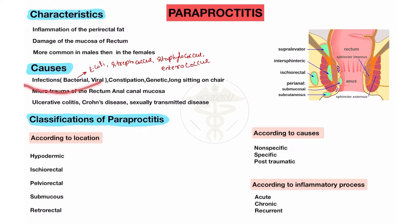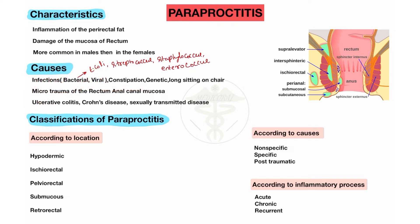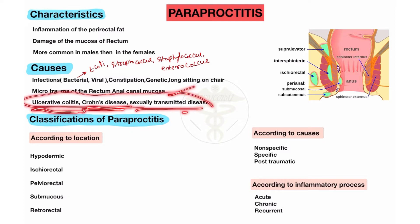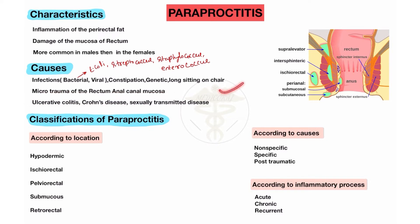The main cause of Paraproctitis is infection — about 70% of cases are caused by bacterial infection. Constipation for a long time is another cause, and in severe cases, ulcerative colitis, Crohn's disease, and sexually transmitted diseases also cause Paraproctitis.